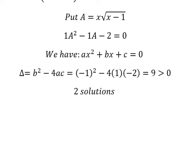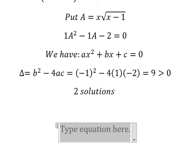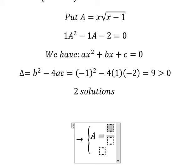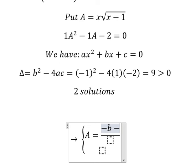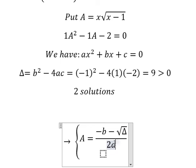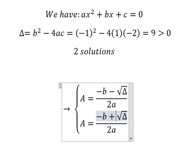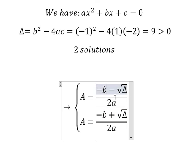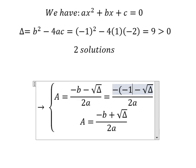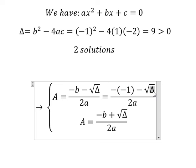So we have the formula to calculate. Capital A equals to negative b minus the square root of delta, over 2a, and the second one is positive. We put the numbers in: b is negative 1, delta is 9, and a is 1.